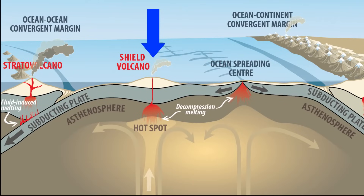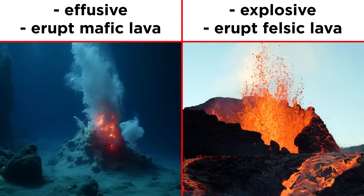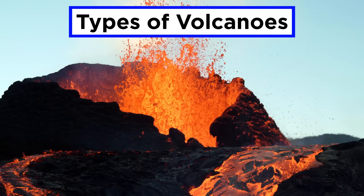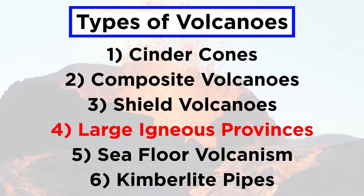Volcanoes that form above mantle plumes are called hotspots, which is the only type of volcano that can form outside of plate boundaries. Volcanoes on continental crust tend to be explosive and erupt felsic lava, while volcanoes on oceanic crust are effusive, erupting mafic lava. There are six main types of volcanoes: cinder cones, composite volcanoes, shield volcanoes, large igneous provinces, seafloor volcanism, and kimberlite pipes.